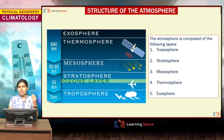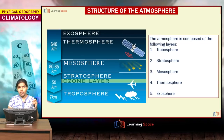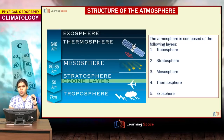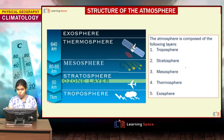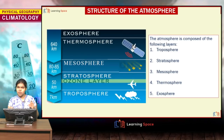These are the different layers of the atmosphere. The atmosphere is composed of the following layers: first is the troposphere, then the stratosphere, then the mesosphere, then the fourth layer is the thermosphere, and the fifth is the exosphere.